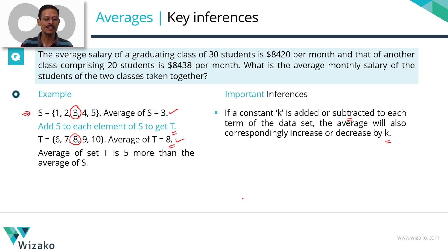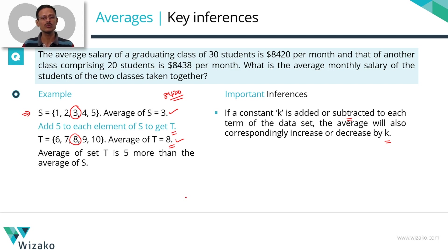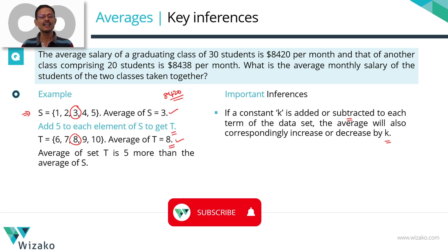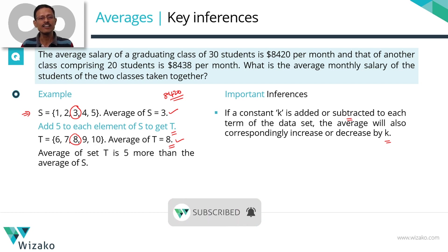If a constant K is added or subtracted to each term of a data set, the average will also correspondingly increase or decrease by the same value K. You saw the same thing in the previous question — we subtracted 8420 from everyone's salary, computed an average (so the average went down by 8420), and subsequently added 8420 back. That is why that last method worked the way it did.